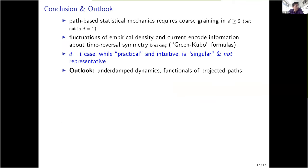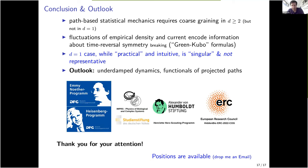To summarize: path-based statistical physics does require coarse graining in dimensions greater than one, but not in one — quite a big difference. Fluctuations of those observables encode information about time reversal symmetry and its breaking in terms of Green-Kubo formulas. My main case is that although the one-dimensional case is practical and intuitive and we always use it, we should not overrate the insight we can get from one-dimensional examples only — there is much more physics in higher dimensions. As an outlook, we now need to do this for underdamped dynamics and functionals of projected non-Markovian paths. I would like to thank the funding agencies for generous funding, and you for your attention. There are also positions available, so if someone is interested please drop me an email. Thank you very much.